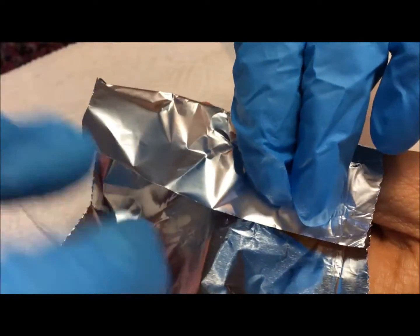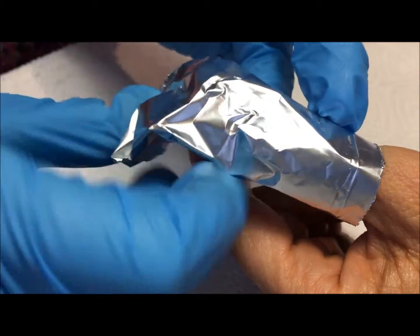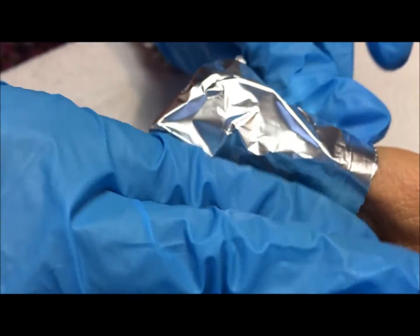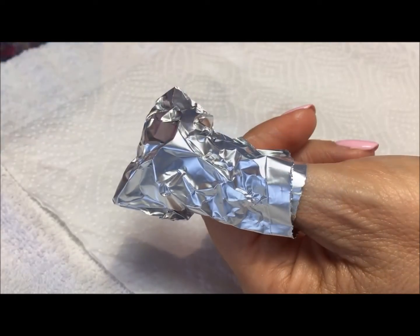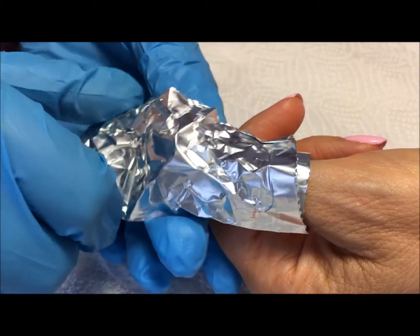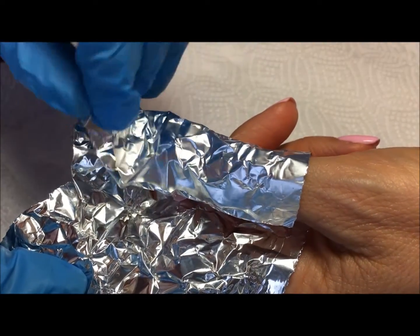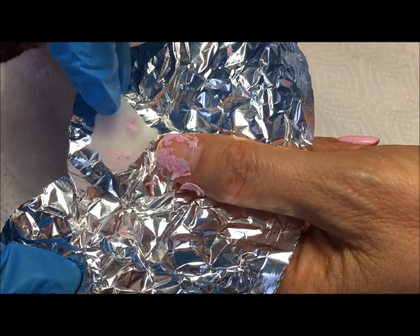Once all ten nails are wrapped, cover the hands with a towel to build up body heat, or use a warm water bottle or bean bag to add additional heat. This will speed up the removal process. The soak-off process takes 15 minutes from wrapping the first nail, though depending on the color used, it can take as little as 8 minutes.